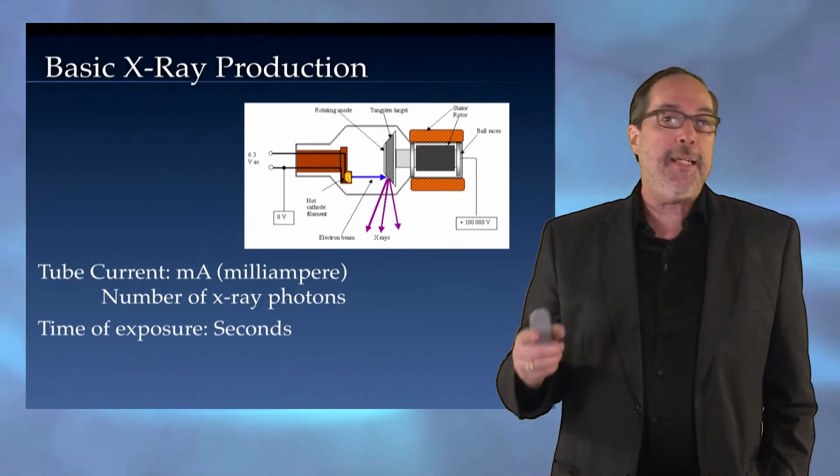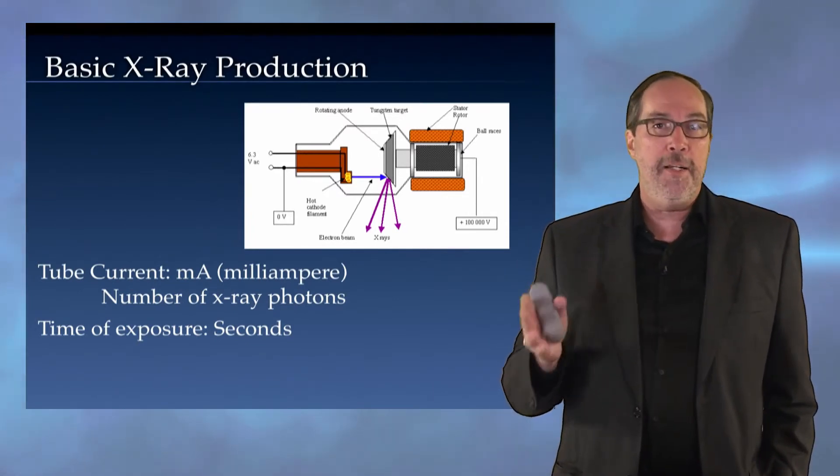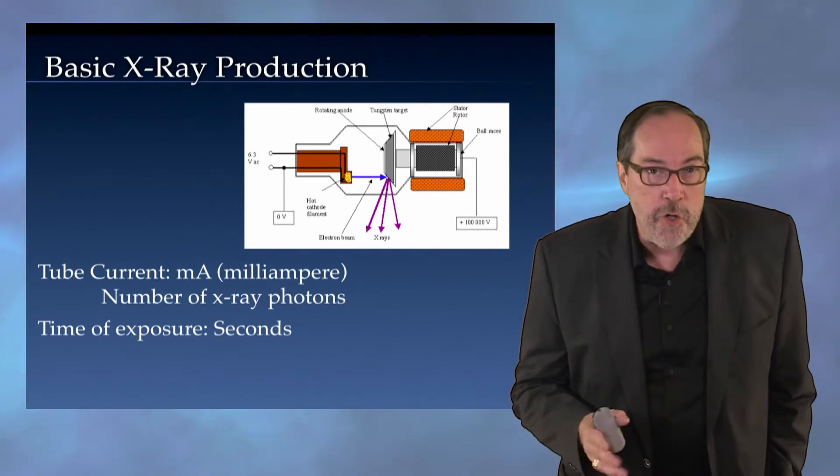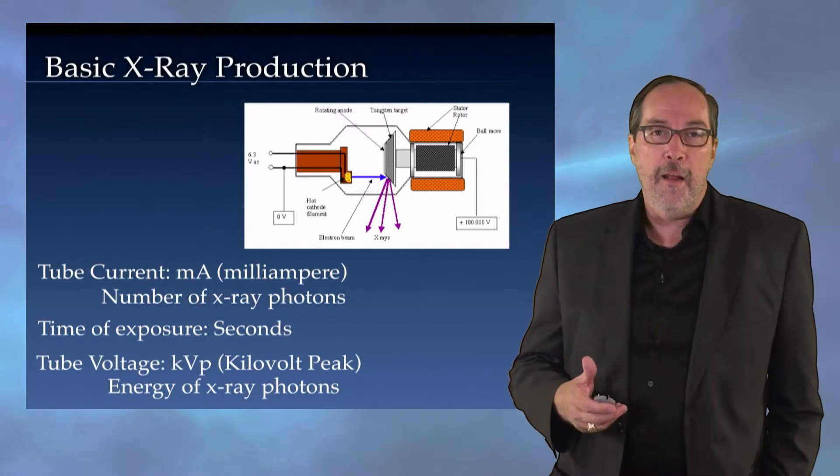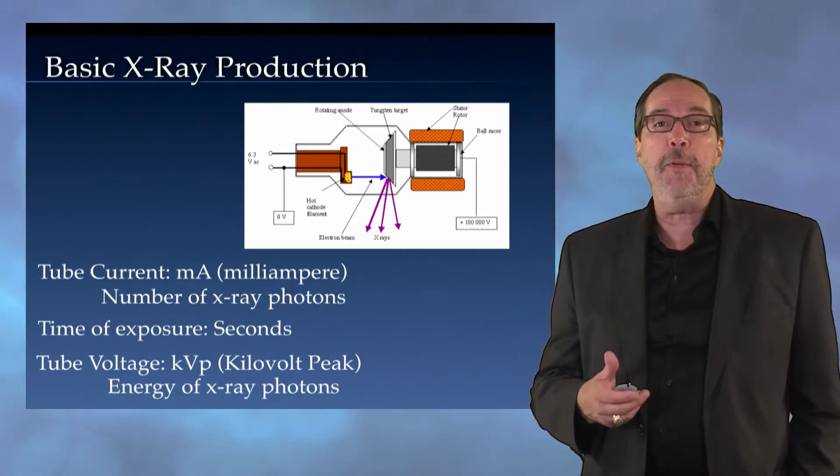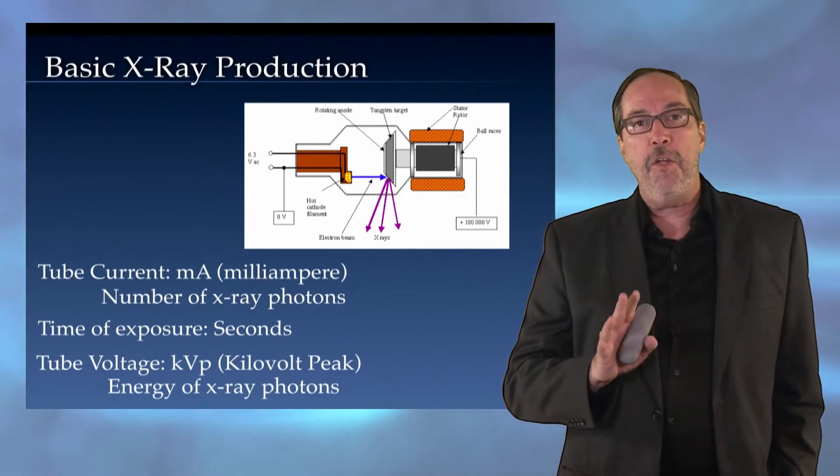Generally with CT, this has to do with the amount of time we're making an exposure relative to the tube rotation around the patient in the gantry. Then, we also have the kilovolts peak, or KVP, which is a reflection of the energy of the X-ray photons.